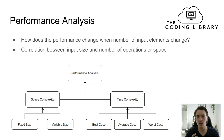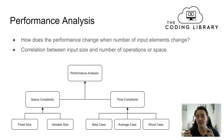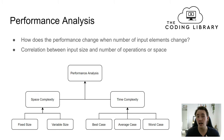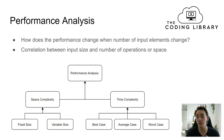When we're analyzing the performance of our data structures and algorithms, we try to measure how the performance changes when the number of input elements changes. So if we have a list or an array, how does the performance change compared to the number of elements? We look at the correlation between input size and the number of operations or the space our algorithm takes up.